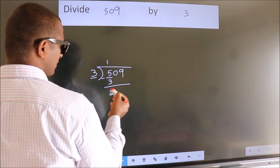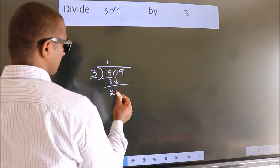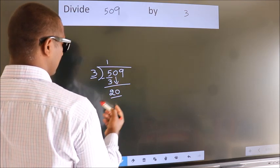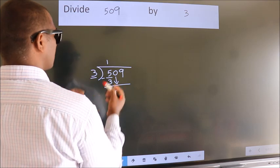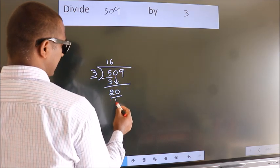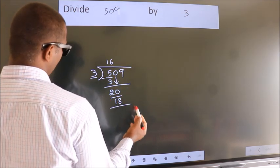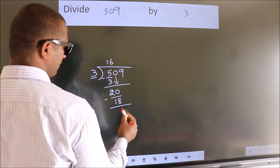After this, bring down the beside number. So, 0 down. So, 20. A number close to 20 in 3 table is 3, 6, 18. Now, we subtract. We get 2.